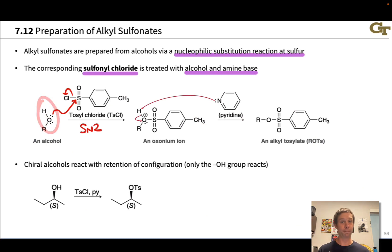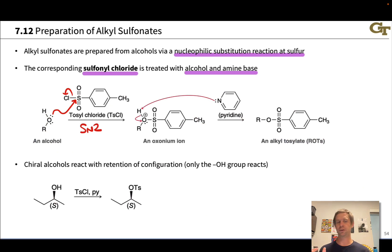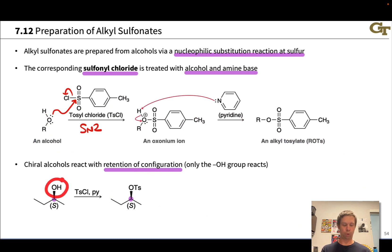Notice we've turned the OH group — a poor leaving group — into OTs, a fantastic leaving group. This is a great way to replace an alcohol with a bond to some nucleophile via an alkyl tosylate intermediate. Chiral alcohols, where the carbon linked to the OH group is a stereogenic center, react with retention of configuration, because only the oxygen participates in this reaction — the R group doesn't participate at all. For example, S-2-butanol reacts with tosyl chloride and pyridine base to give the tosylate with retention of configuration at that carbon.